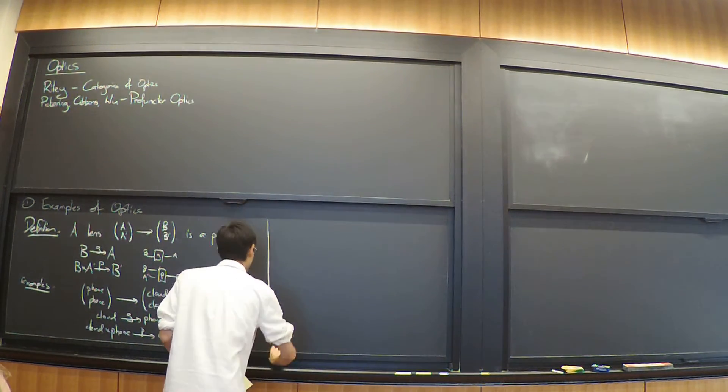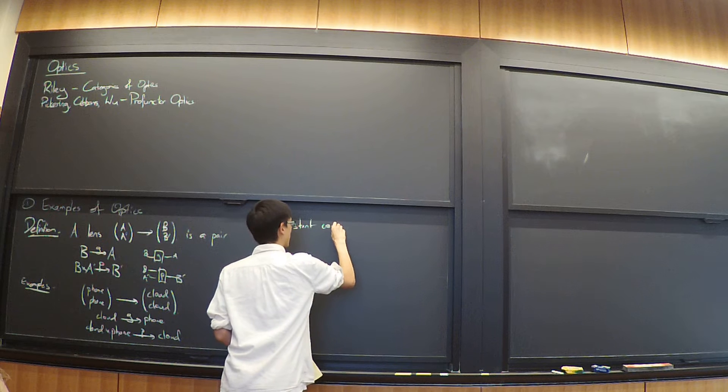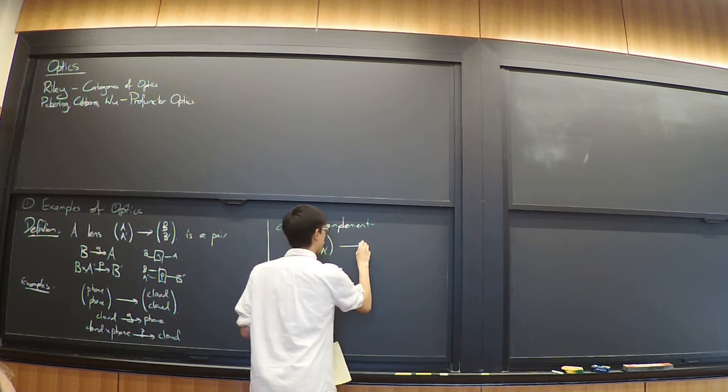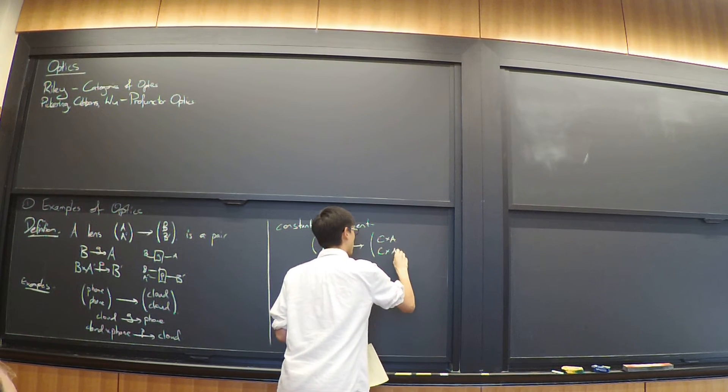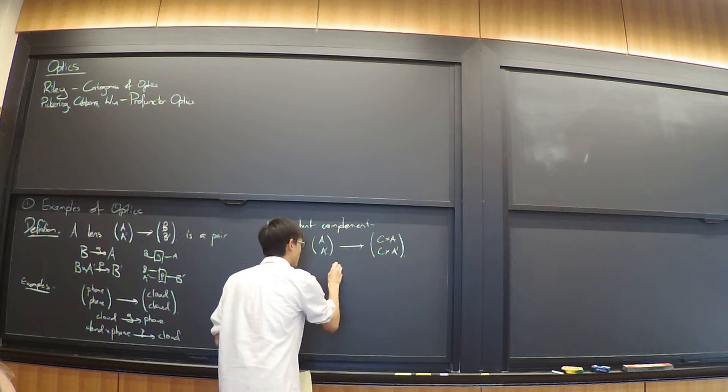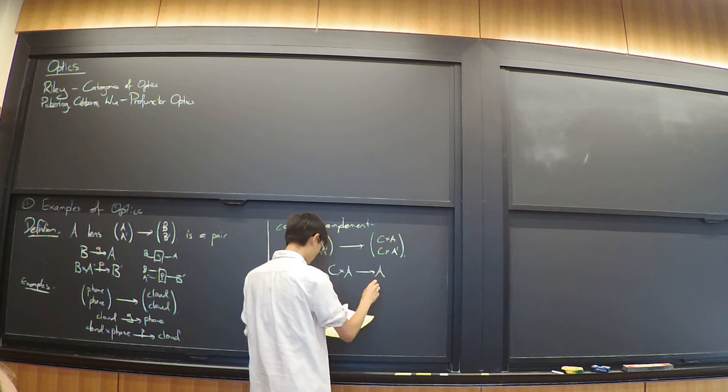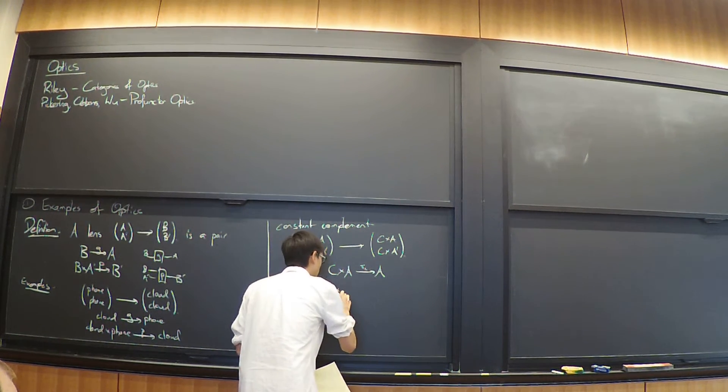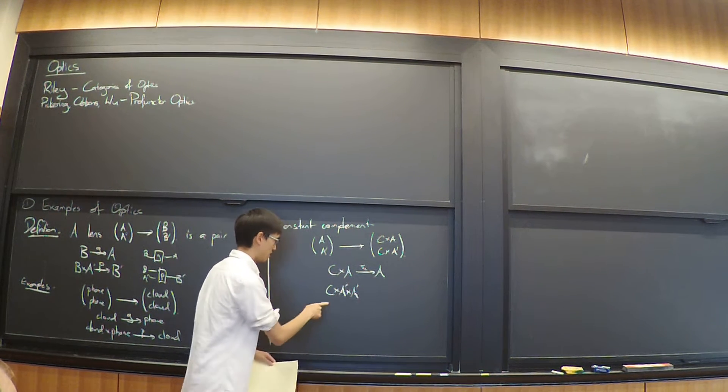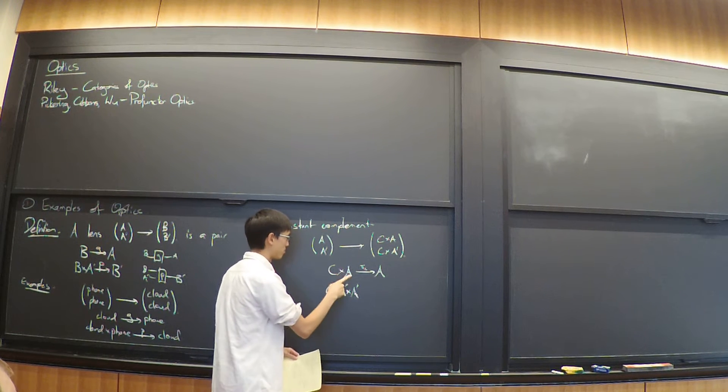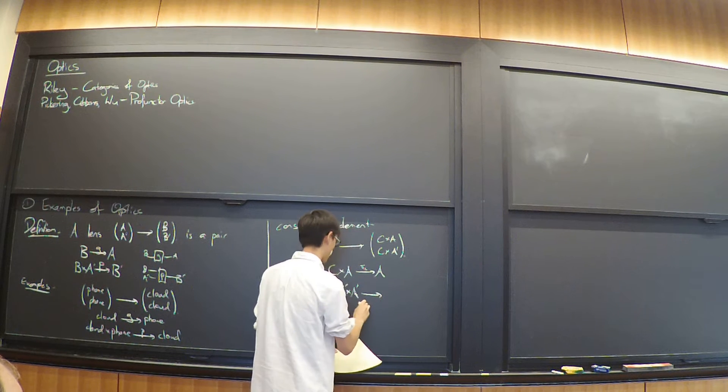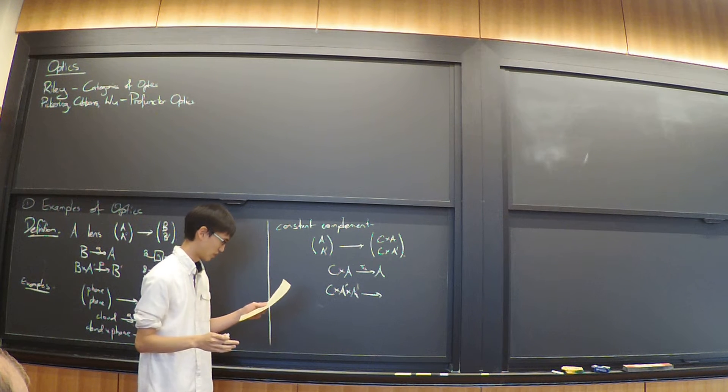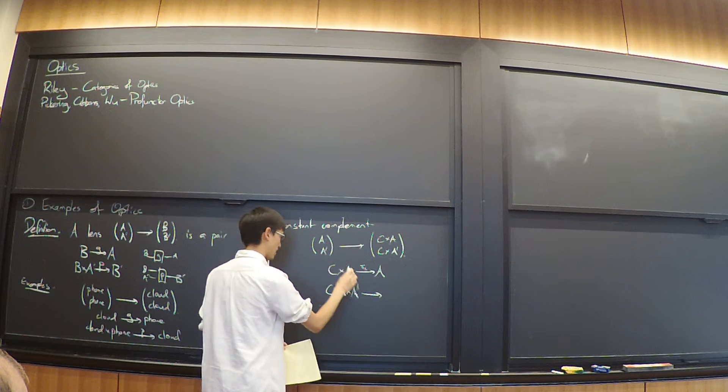So that's some heuristic idea about where these things arise in terms of database synchronization. A more concrete example is a constant complement lens. So we have products lying around, and the constant complement lens is a lens of the form A to A prime, to C times A, C times A prime. So C being the complement, and it being, the constant must refer to the fact that our functions aren't going to change it. So we have a map from C times A to A, and I'm just going to project into the second factor.